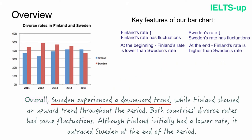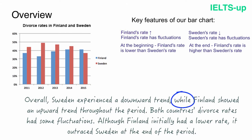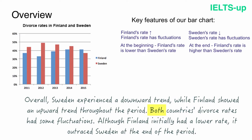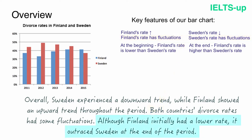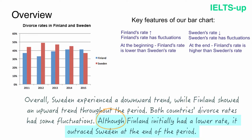'Sweden experienced a downward trend' is a nice way of saying Sweden's rate went down, and 'Finland showed an upward trend' means Finland's rate went up. I used the linking word 'while' to contrast opposite trends — a very good technique. I used 'both' to indicate that two countries shared the same feature. Finally, I used 'although' because Finland's rate was initially lower than Sweden's but then changed, outracing Sweden at the end of the period.